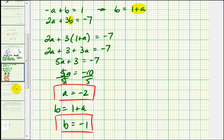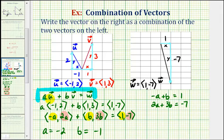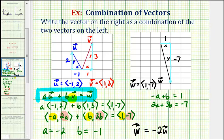So now let's go back to our previous slide. If a equals negative two and b equals negative one, using our equation here, we can say that vector w is equal to negative two times vector u plus negative one times vector v, or just minus vector v.